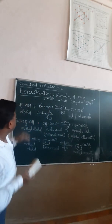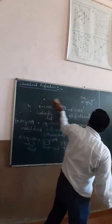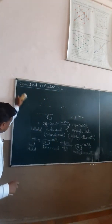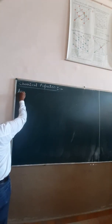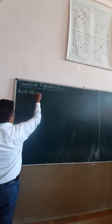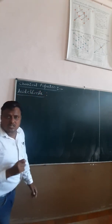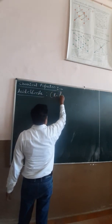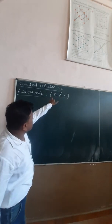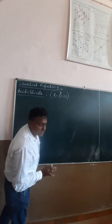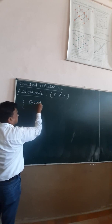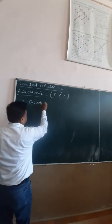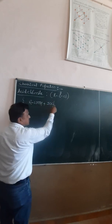We have another method for the formation of an ester using alcohol. Here we use an acid chloride. The general formula for acid chloride is RCOCl. How to form this acid chloride: when a carboxylic acid (RCOOH) reacts with thionyl chloride (SOCl₂) in the presence of pyridine, the H combines with Cl to form HCl gas, and the O combines with SO to form SO₂ gas. What remains is RCOCl — the acid chloride.